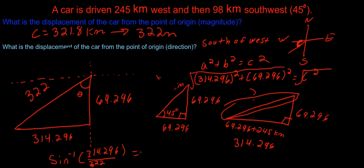314.296 divided by 321.8 gives us 77.6 degrees. Like I said, that's the angle against the y axis. We want our angle to be against the x axis, so we subtract that by 90. So 90 minus 77.6 equals 12.4 degrees. Our final answer is 12.4 degrees.